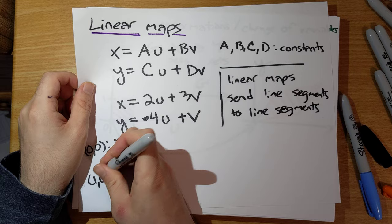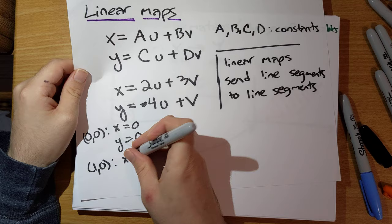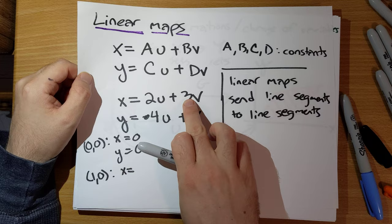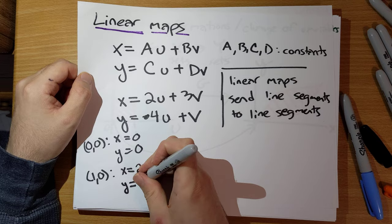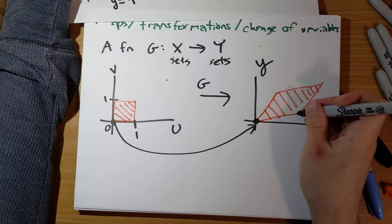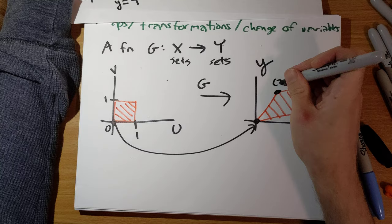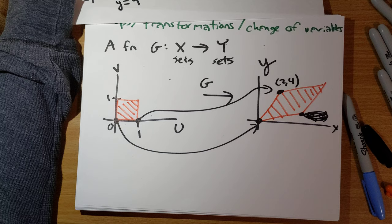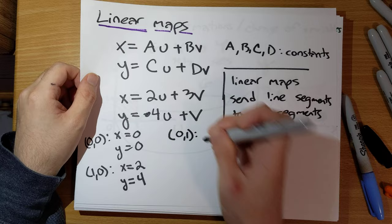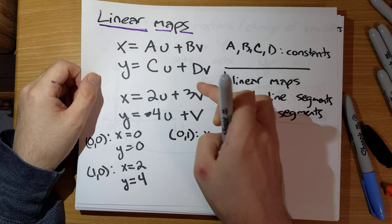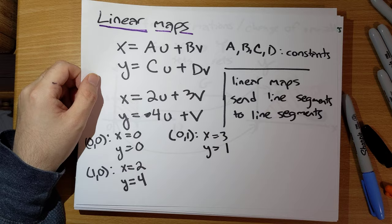How about the point (1, 0)? x is 2 times 1 plus 3 times 0, which is 2. y is 4 times 1 plus 0, which is 4. So the point (1, 0) gets sent to (2, 4). And the point (0, 1)? x would be 2 times 0 plus 3 times 1, which is 3. y would be 4 times 0 plus 1, which is 1. So (0, 1) gets sent to (3, 1).